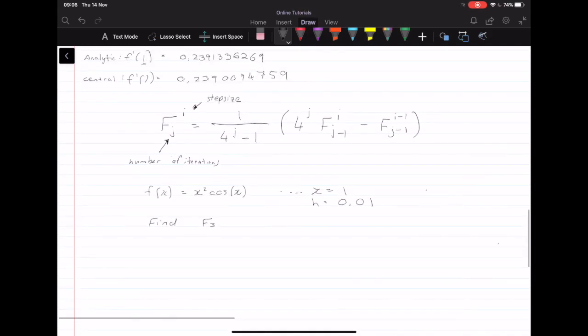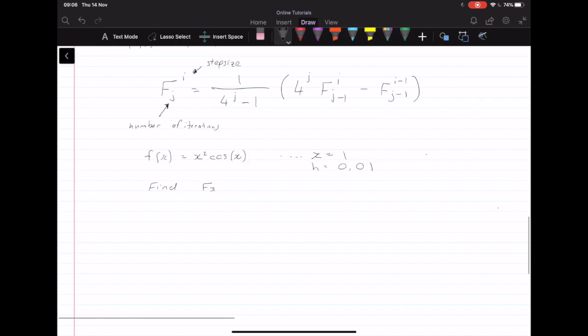So the best way to use Richardson's is using an extrapolation table. So the table looks like this. You have i, then you have h_i. Then we have f⁰. So here the question says we need to find f³. So we have f⁰_i, f¹_i, f²_i, and f³_i. So this is our third iteration.